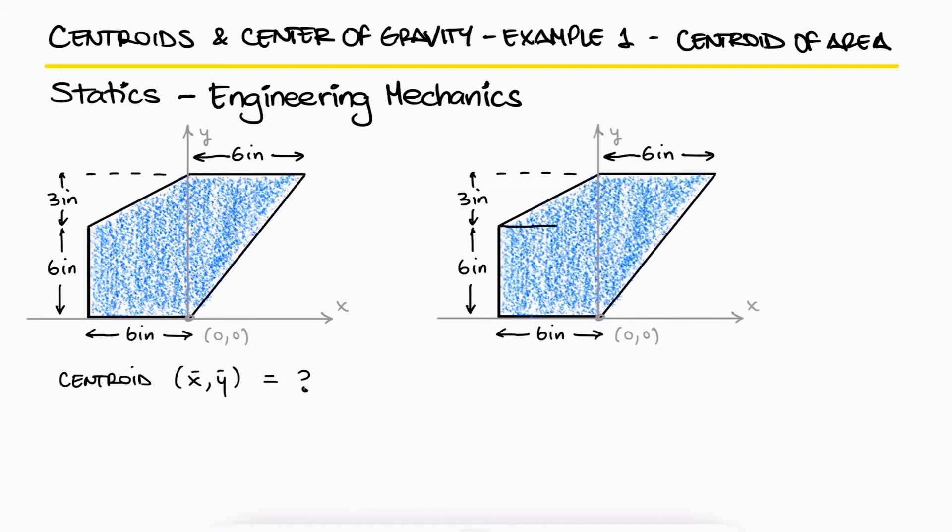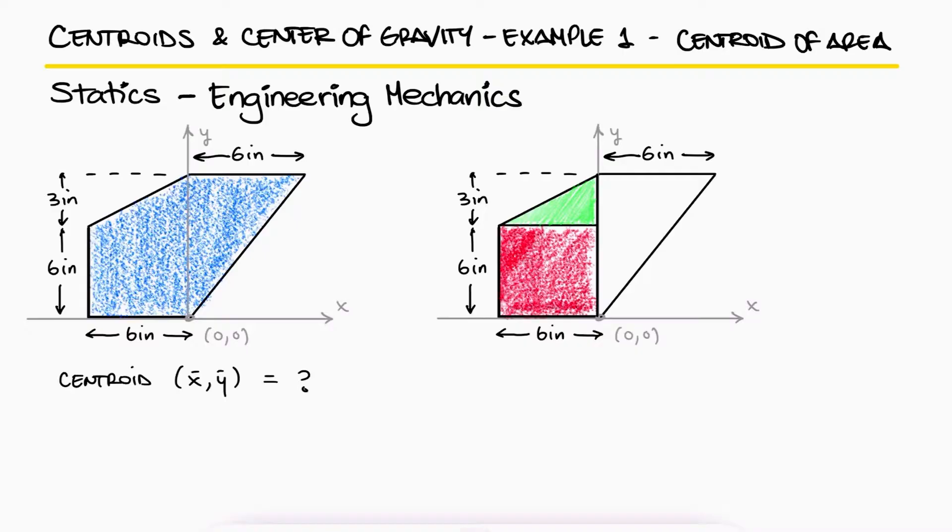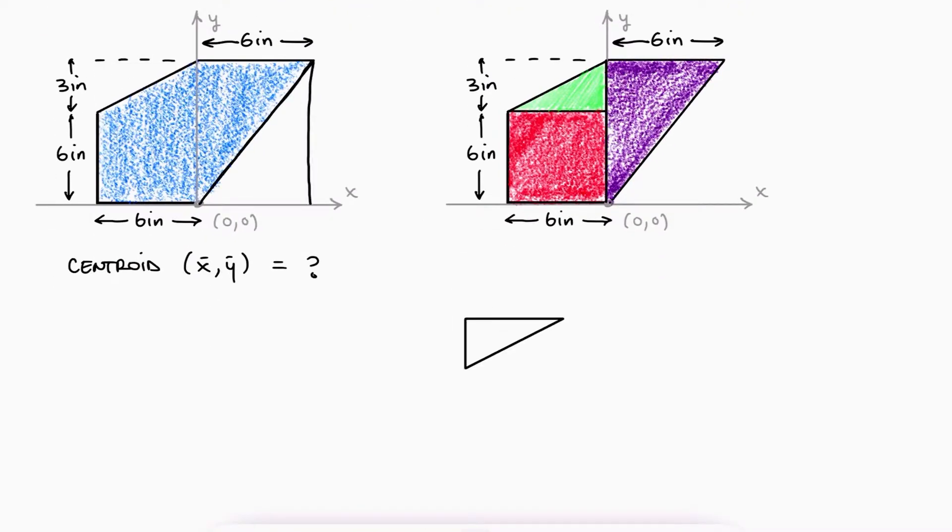The geometry shown can be obtained by adding a square and two triangles, or by subtracting two triangles from a rectangle. But since they're practically the same in terms of time and calculations, we'll go with the addition in this case.